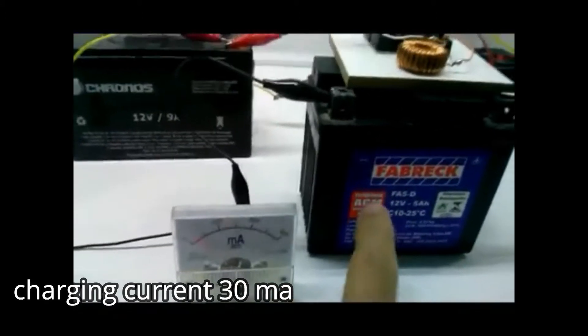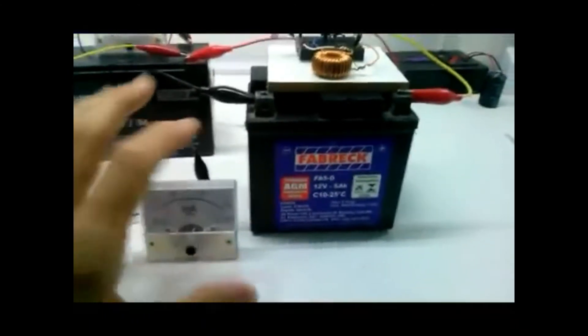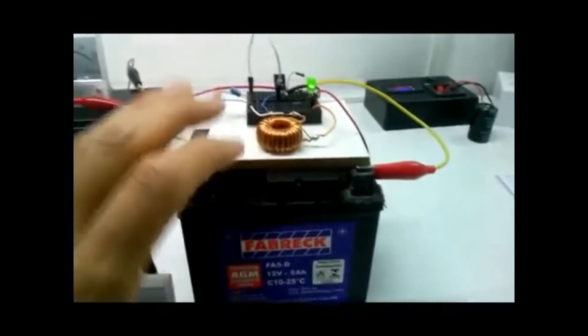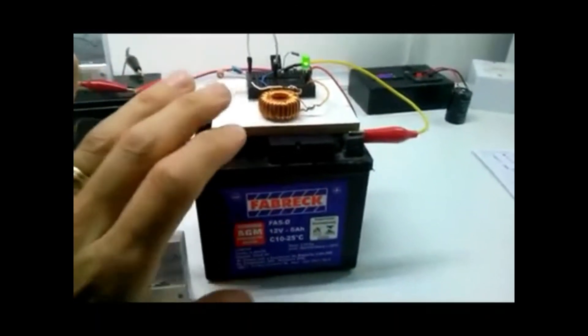This Joule Thief can safely keep charging the battery for many hours, maybe 24 or 48 hours, with that current to desulfate it.